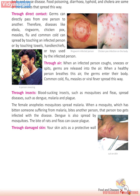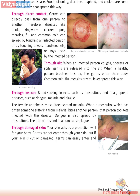Through damaged skin — your skin acts as a protective wall for your body. Germs cannot enter through your skin. But if your skin is cut or damaged, germs can easily enter and cause disease. Germs of diseases such as tetanus get into your body through cuts in the skin.